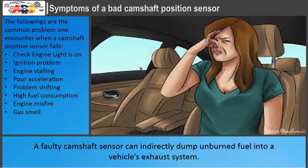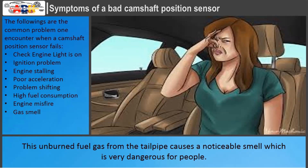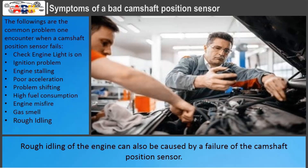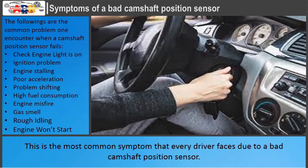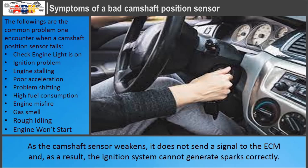A faulty camshaft sensor can indirectly dump unburned fuel into a vehicle's exhaust system. This not only affects fuel economy but can also cause irritating black smoke from the tailpipe. This unburned fuel gas from the tailpipe causes a noticeable smell, which is very dangerous. Rough idling of the engine can also be caused by a failure of the camshaft position sensor — rough idle occurs due to asynchronous combustion in the cylinder. The most common symptom is that the vehicle starts very difficultly or in some cases does not start at all. As the camshaft sensor weakens, it does not send a signal to the ECM, and as a result, the ignition system cannot generate sparks correctly.